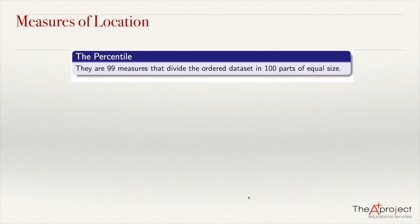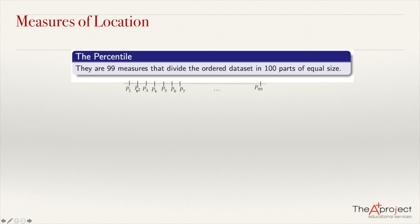Percentiles are 99 measures that divide the ordered data set into 100 parts of equal size. For example, if this line represents the whole data set, P1, P2, P3 are the percentiles, up until P99. The value of percentile P1 is one that has 1% of the data below it and 99% of the data above it.